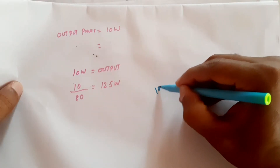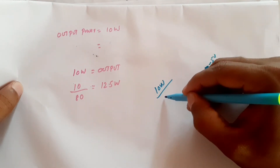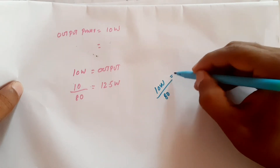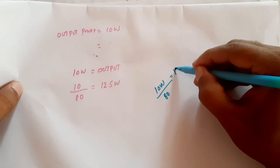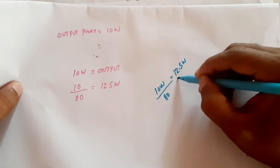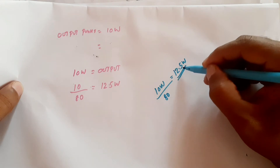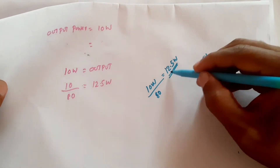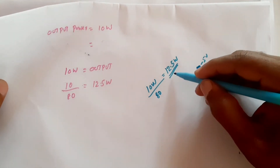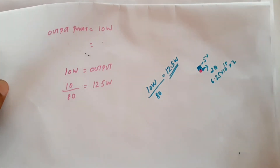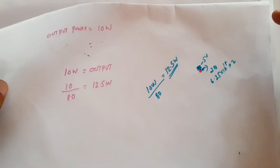If the efficiency is 80 percent, then 20 percent is lost. So we need to supply 12.5 watts at the input to get 10 watts at the output. The remaining 2.5 watts is lost in the form of heat.